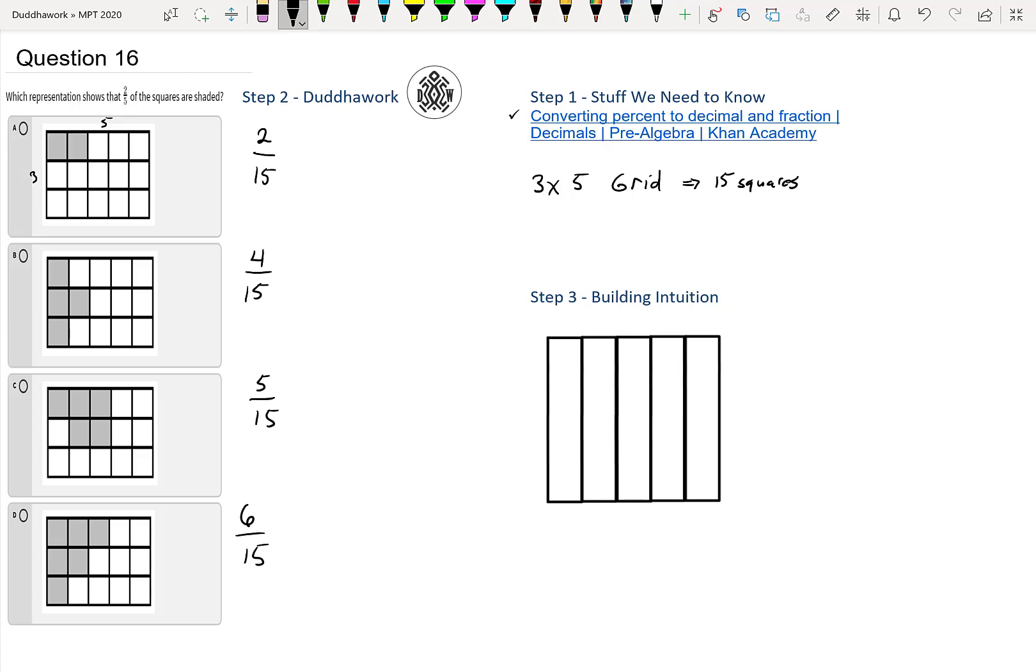Now it asks which representation shows that two-fifths are shaded so we can convert these fractions into fifths, right? So I need to divide by three in the numerator and denominator to give me five. So in this case that would be, sorry I forgot my three. So then I get a three, 15 divided by 3 I get a 5. And then if I divide by 3 on top, I would get 2 over 3, like two-thirds of one-fifth essentially.